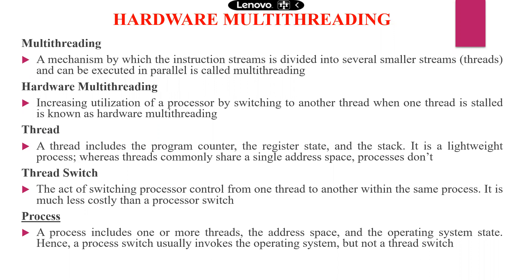Hardware multi-threading is increasing the utilization of a processor by switching to another thread when one thread is stalled. When we have more number of threads, if any one thread is stalled, the system will not stop the processor — it will move on to another thread. That is called hardware multi-threading.